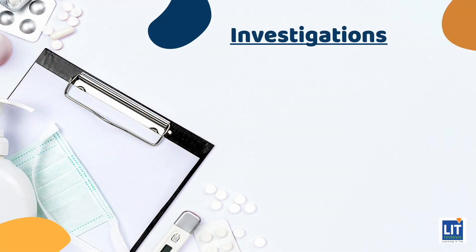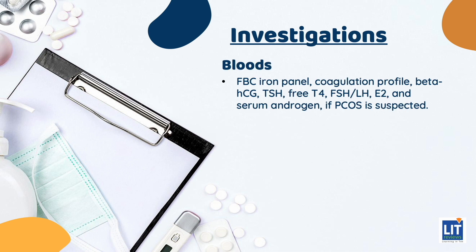As AUB is a diagnosis of exclusion, investigations are guided by information from history and physical examination. The following investigations are commonly performed for AUB, divided into bloods, imaging, and others. For bloods: FBC and iron panel, coagulation profile, beta-HCG, TSH, T3/T4, FSH and LH, E2, and serum androgens if PCOS is suspected.